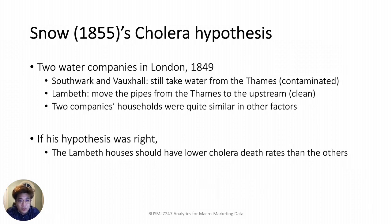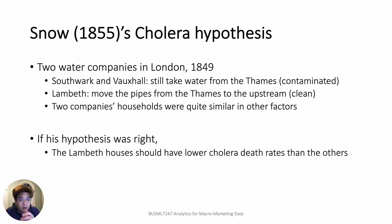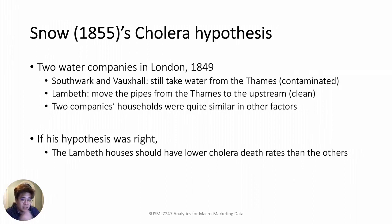In detail, he looked into households using water from two companies in London: the Southwark and Vauxhall Water Works Company, and the Lambeth Water Company. Both companies took their water from the Thames, which had already been polluted by cholera victims' excretions via runoff. But in 1849, the Lambeth had moved its intake pipes upstream, above the main sewage discharge point, giving its customers uncontaminated water. The customers of the two companies were very similar — the only difference was that they drank different water.